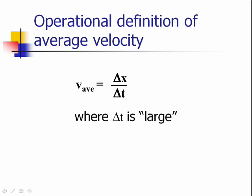The operational definition for average velocity is simply how far down the road you get, delta x, divided by how much time it took you to get down the road, delta t.